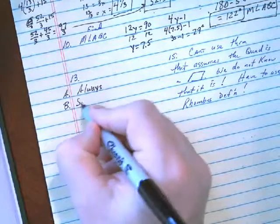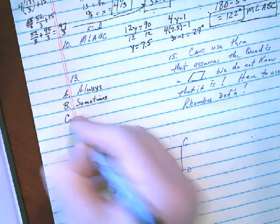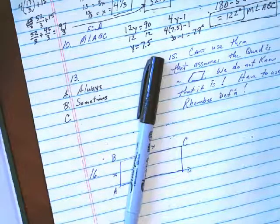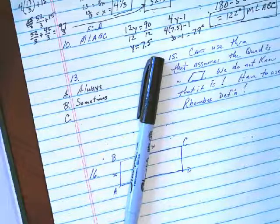B: A parallelogram is a rhombus. That is sometimes. A parallelogram could be a square, that's not a rhombus. So that's a case when it's not a rhombus. But could it be a rhombus? Sure.